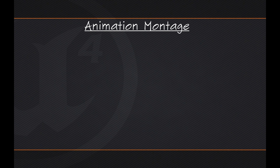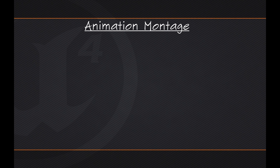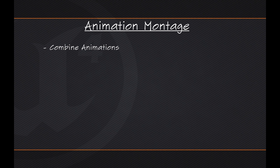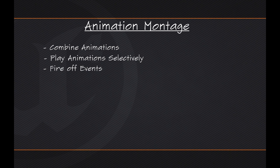The reason we wanted to talk about Animation Montages for just a second is this is the system we are going to be using for our Punching Sequence so that our Character can punch. In short, the purpose of an Animation Montage is to allow you to combine animations. That is only the first part, because there are other ways to do that in Unreal Engine 4. But you can section off those animations within the montage and then play animations selectively from it. You can also fire off events, essentially using Montages to take an entire group of related animations and make them into a single unit, within which you can choose exactly what is happening at a given time.